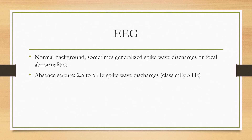On the EEG, they will normally have a normal background, although sometimes you can also see generalized spike-wave discharges or focal abnormalities. When you provoke an absence seizure, you'll see 2.5 to 5 Hz spike-and-wave discharges, and classically it's around 3 Hz.